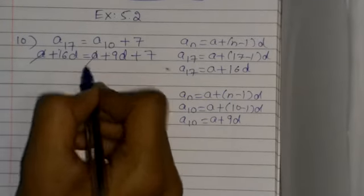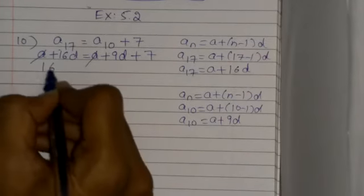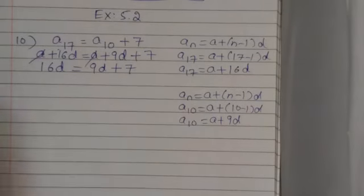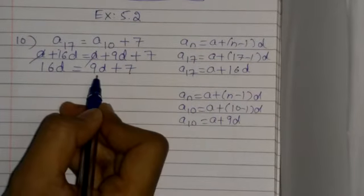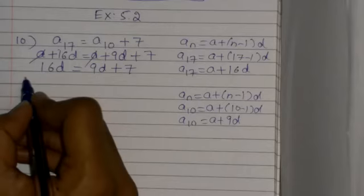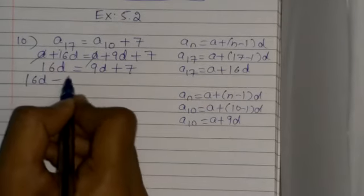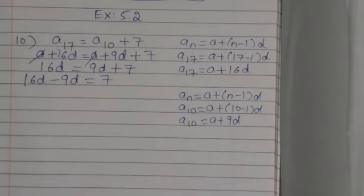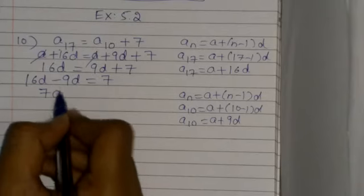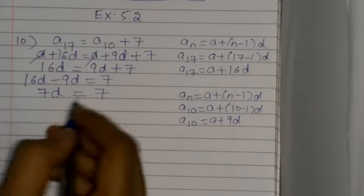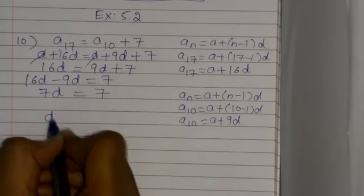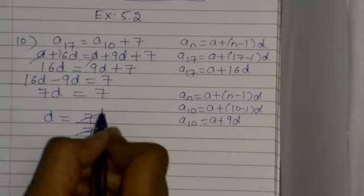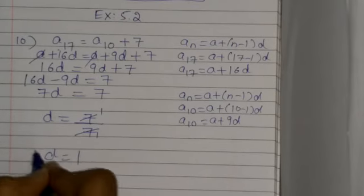The a's cancel out. So 16d = 9d + 7. Taking 9d to the left side: 16d - 9d = 7, which gives 7d = 7. Therefore d = 7 ÷ 7 = 1. So d = 1.